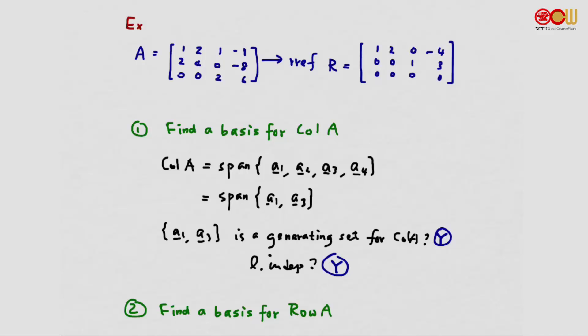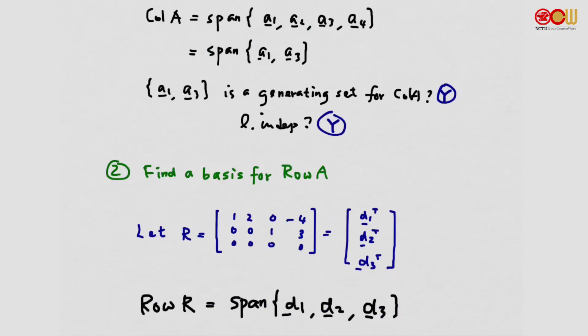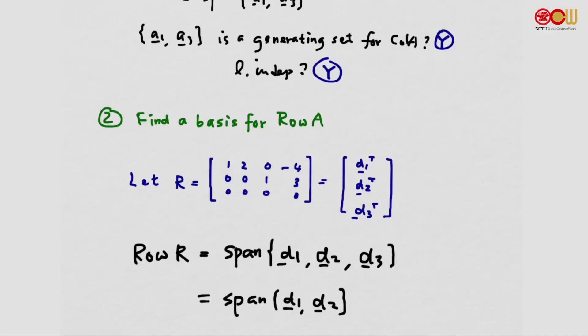The row space of A is in fact the same as the row space of R, and we have R right here. So let's find the row space of R — it's an easier matrix. The row vectors of R are d1, d2, and d3. The last vector is the zero vector, so we can remove it: span{d1, d2, d3} = span{d1, d2}.